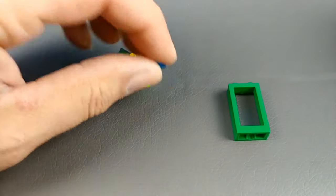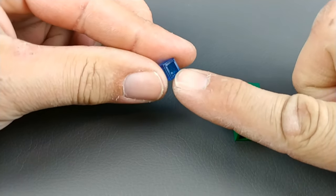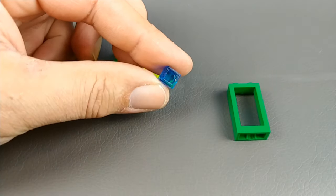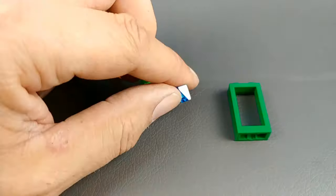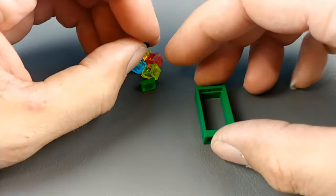So the first thing you want to keep in mind is when you're looking at the cheese wedge piece, the part that the stud would normally go inside of to snap it to another piece of plate or brick or whatever always goes towards the inside of the window frame.